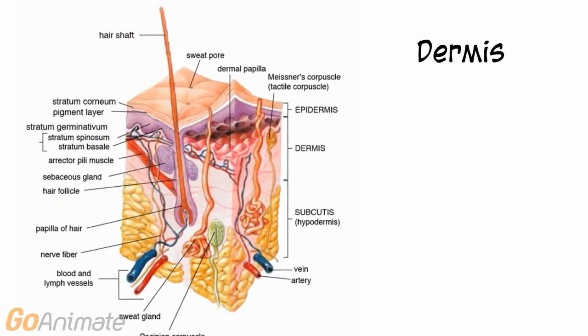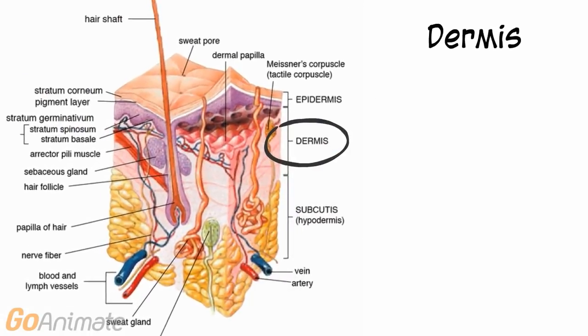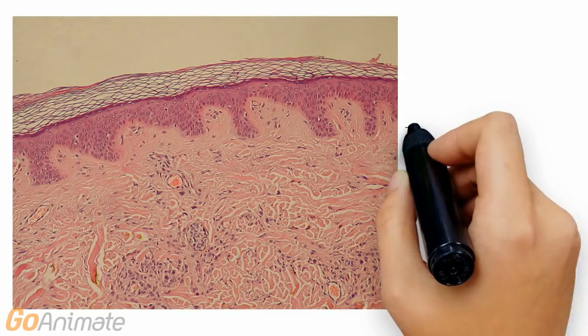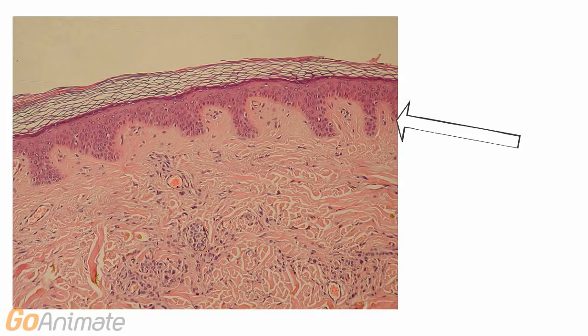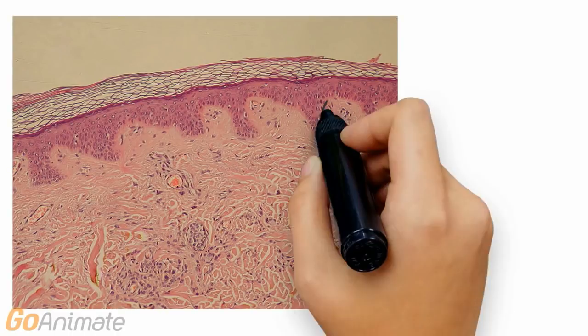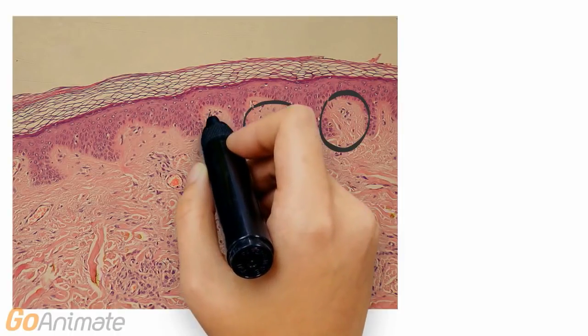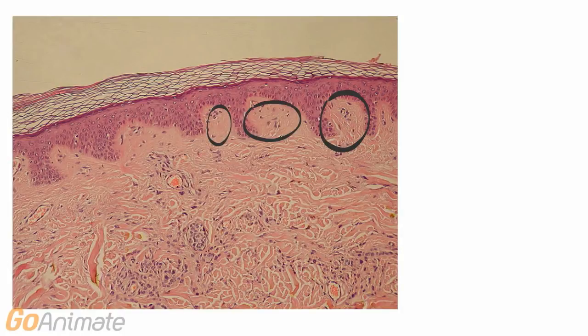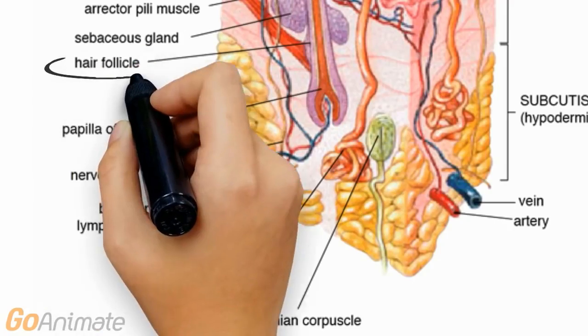Let's look at the dermis in more detail. The dermis contains connective tissue. The border between the epidermis and dermis contains undulations called dermal papillae. There are a lot of structures in the dermis.